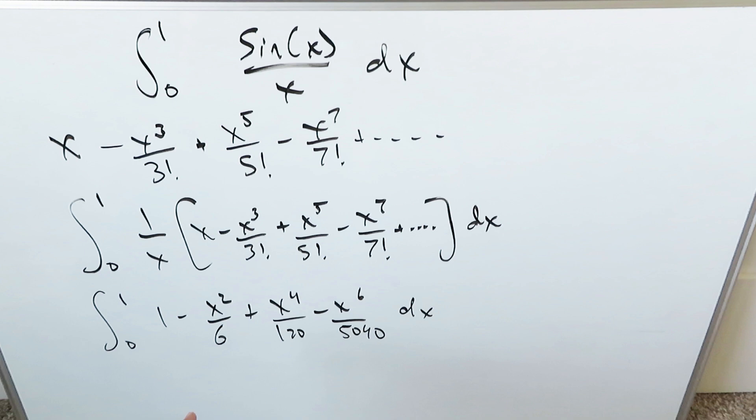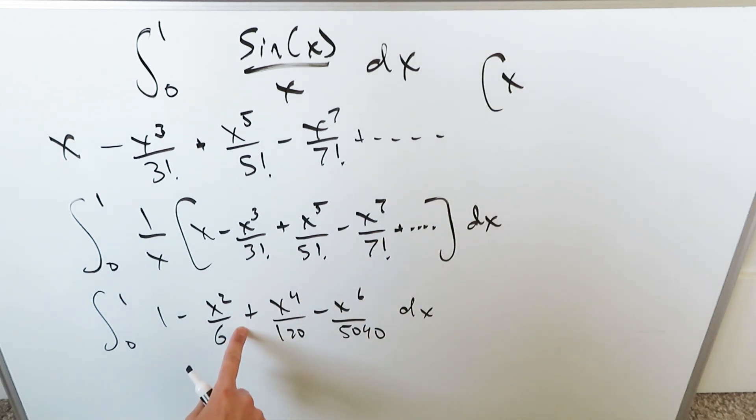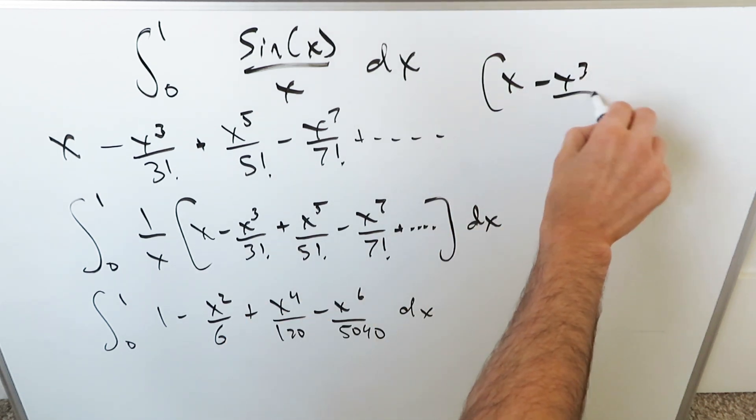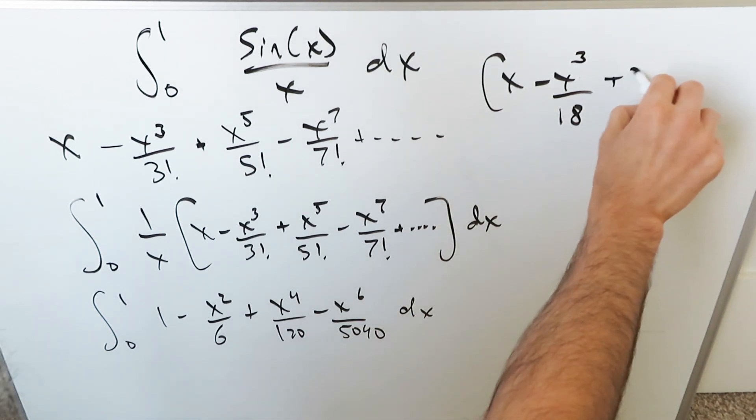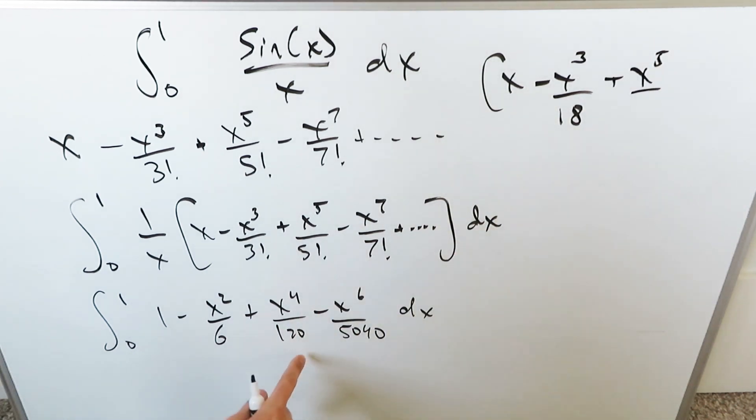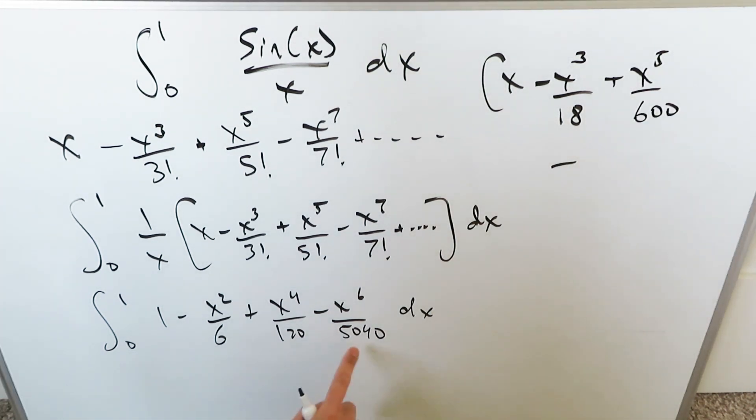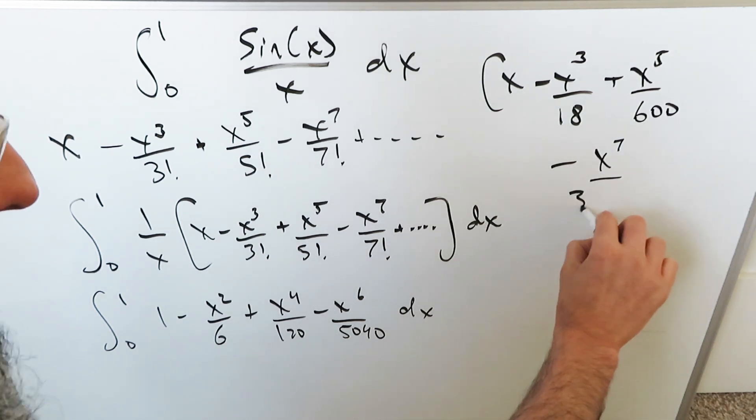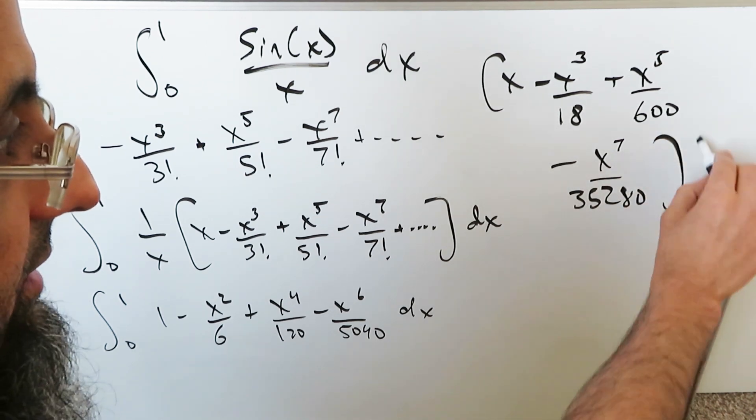Now we have to integrate this using basic polynomial integration. From this 1, I'm going to get an x as my anti-derivative. From here, I'll get a minus x cubed over 3 times 6, which is 18. From here, I'll get a plus x to the 5 over 5 times 120 - that's 600. Then I have minus x to the 7 over 5,040 times 7, which is 35,280. And we're looking at this from 1 and 0.